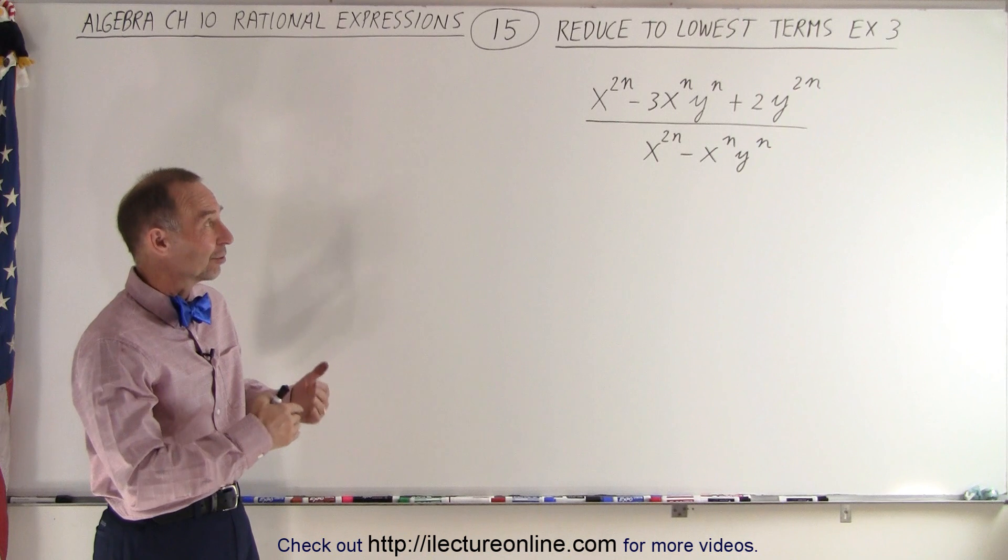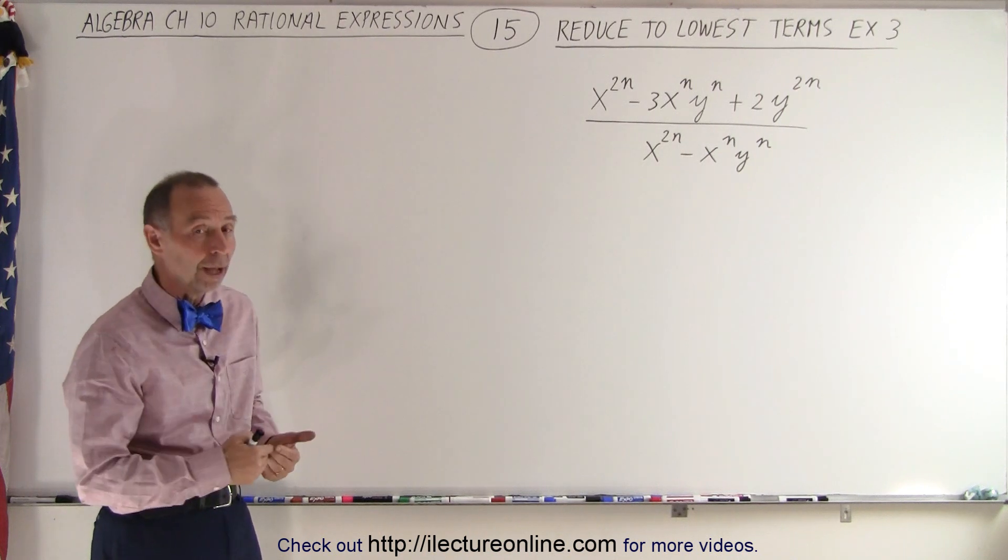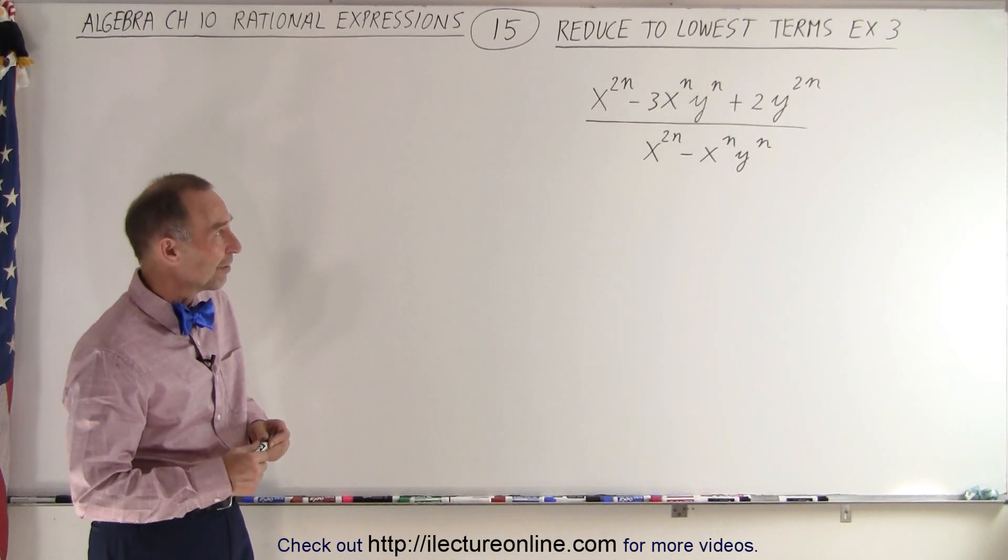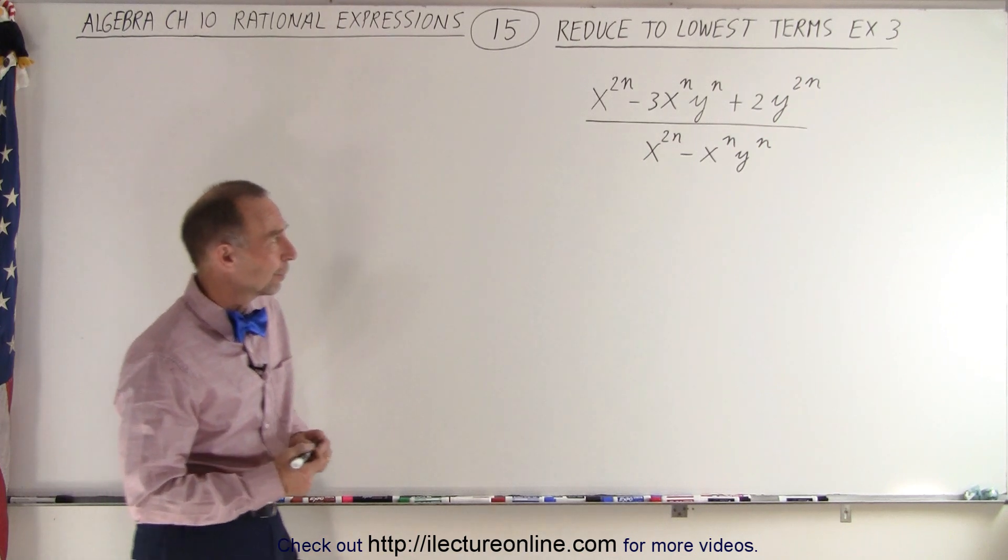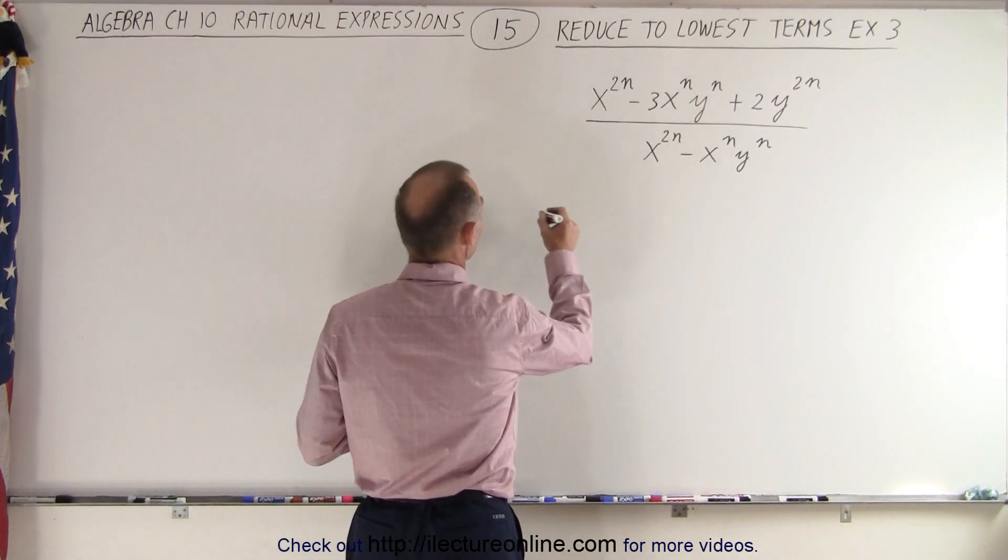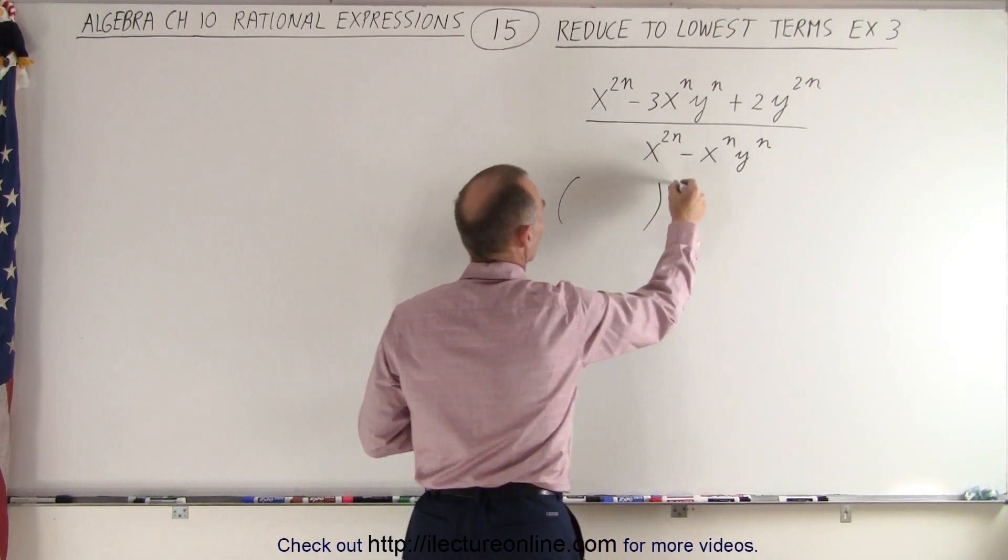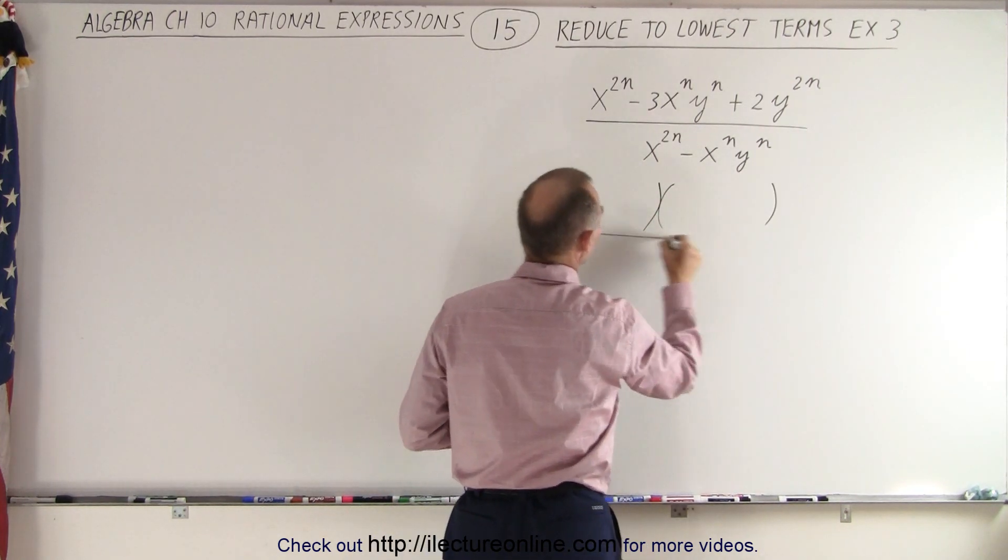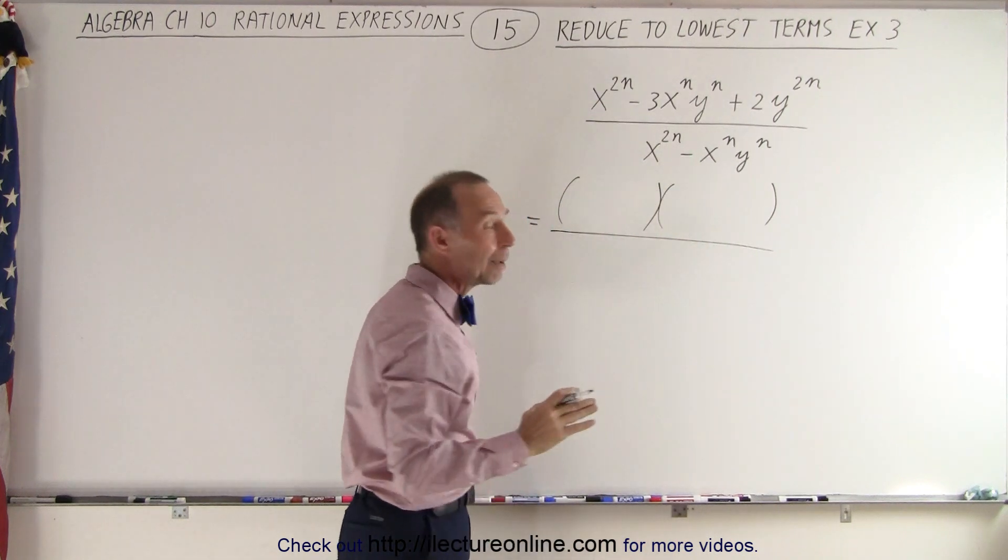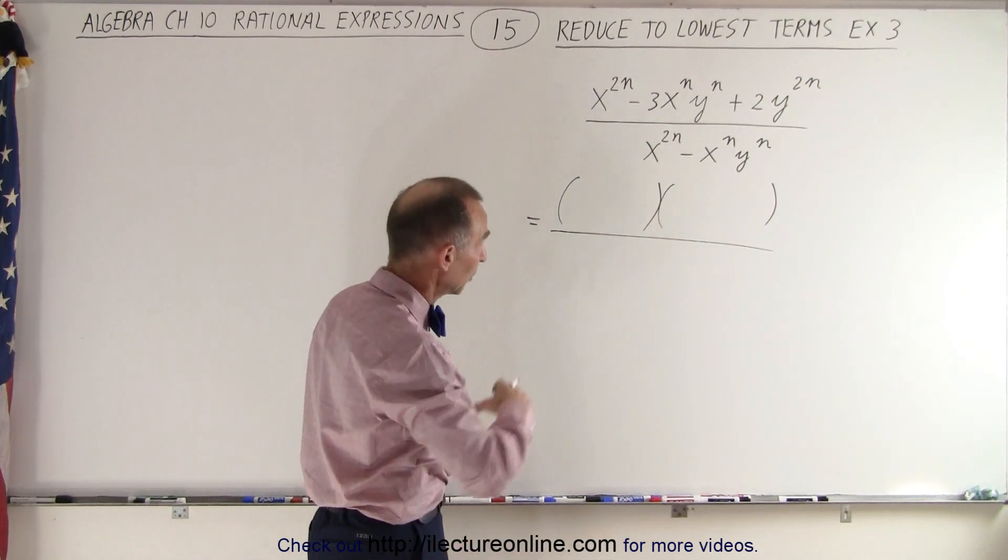Well, we're trying to factor the numerator. We'll try to factor the denominator to see if we can have some common terms or common factors we can eliminate or reduce. Let's see what we can do with the numerator. We think we should write that as the product of two binomials, and in the denominator we can perhaps factor out something that's common, but we'll get to that.